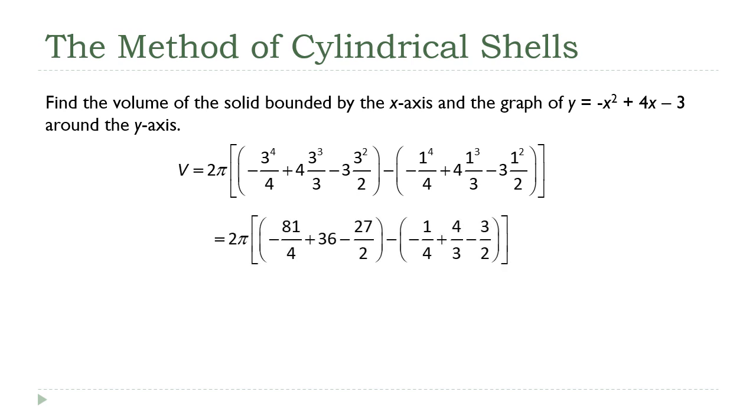And now it's really just an arithmetic problem. If we simplify the exponents, we get this. And then if you do a common denominator, do all the addition and subtraction. The left-hand part becomes 9 fourths, the right-hand part is negative 5 twelfths. One more fraction addition, then we get our final answer, 16π over 3.